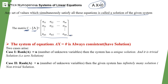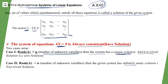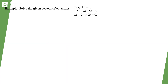The system Ax = 0 is always consistent, meaning it always has a solution, but that solution may be unique or infinite. If the rank of the coefficient matrix equals n (the number of unknowns), the system has a unique solution — which is the trivial solution. If the rank is less than n, the system has a non-trivial solution with infinitely many solutions.